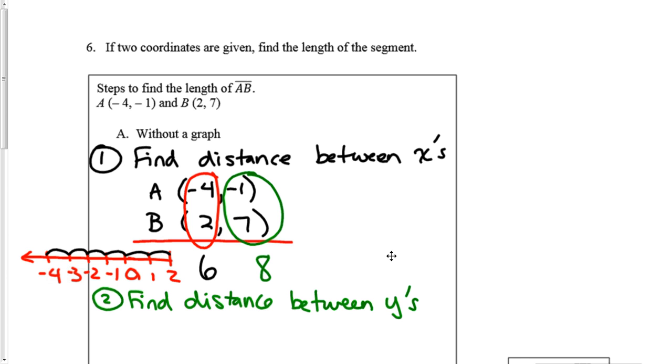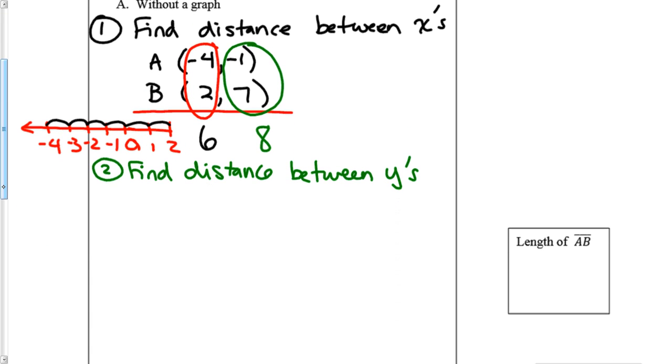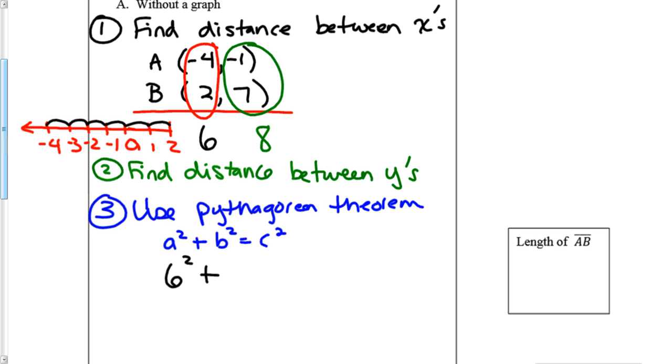So once I have found the distance between the x's and the distance between the y's, the next thing I need to do is use Pythagorean theorem. That's what we've been doing anyway. So we have a² + b² = c². It doesn't matter which one I put in for a or b, as long as I know I'm solving for c. So I have 6² + 8² = c². Now all I have to do is work out my arithmetic. 6² is 36, 8² is 64, which gives me 100. Then I take the square root of 100, which is 10, which means the length of AB is 10.